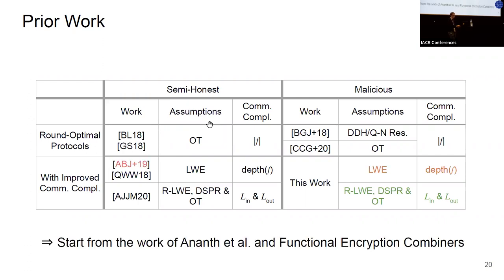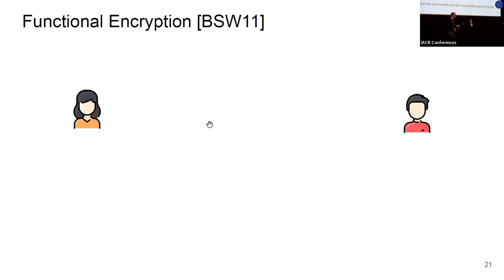The starting point for our first result is the compiler of Anand et al., which relies on a notion called function encryption combiners. Before introducing function encryption combiners, it is useful to introduce function encryption. In function encryption, Alice samples a master secret key, which she uses to generate functional keys together with a function f.